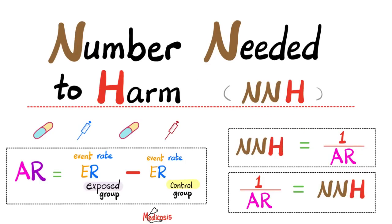In previous videos, we talked about the measures of central tendency, such as the mean, the median, and the mode. We discussed the measures of dispersion, such as the range, the interquartile range, the standard deviation, and the z-score.